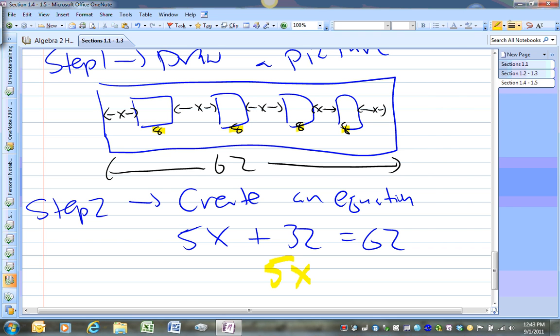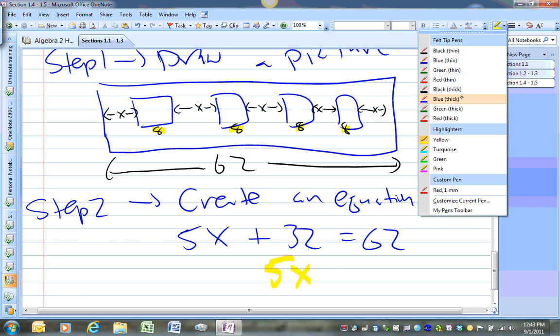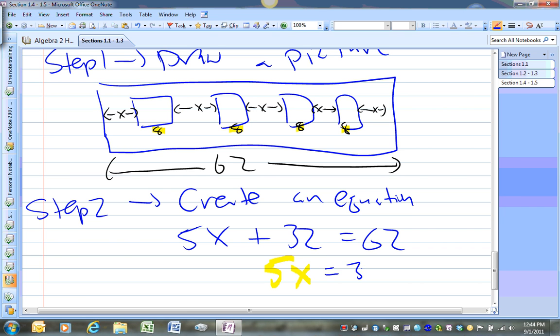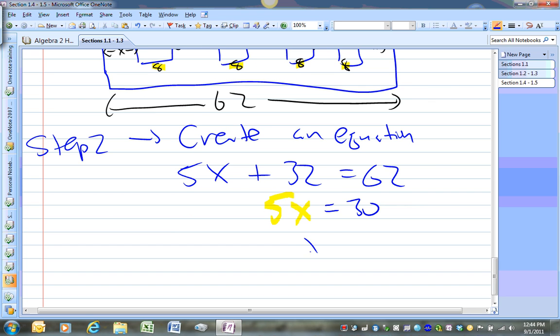Equals 30, x equals 6. So not too bad. So the separation will be 6 feet for the banners.